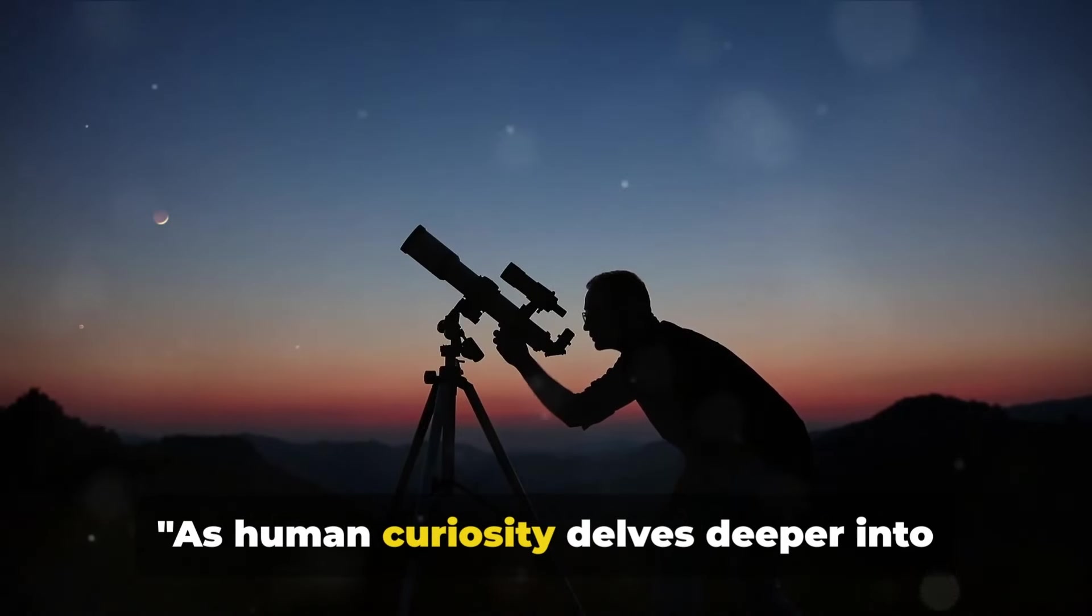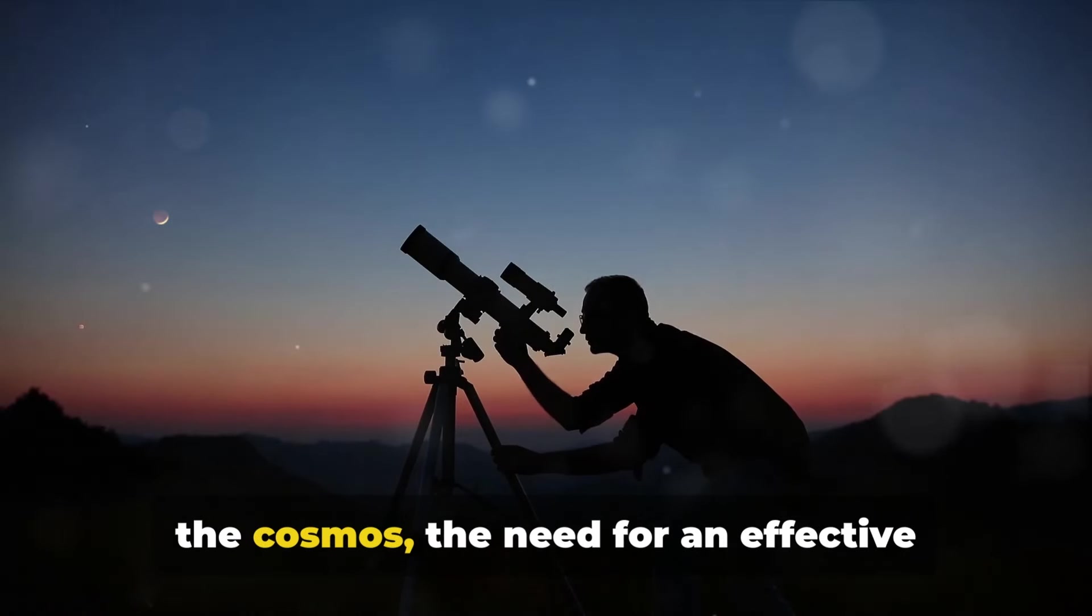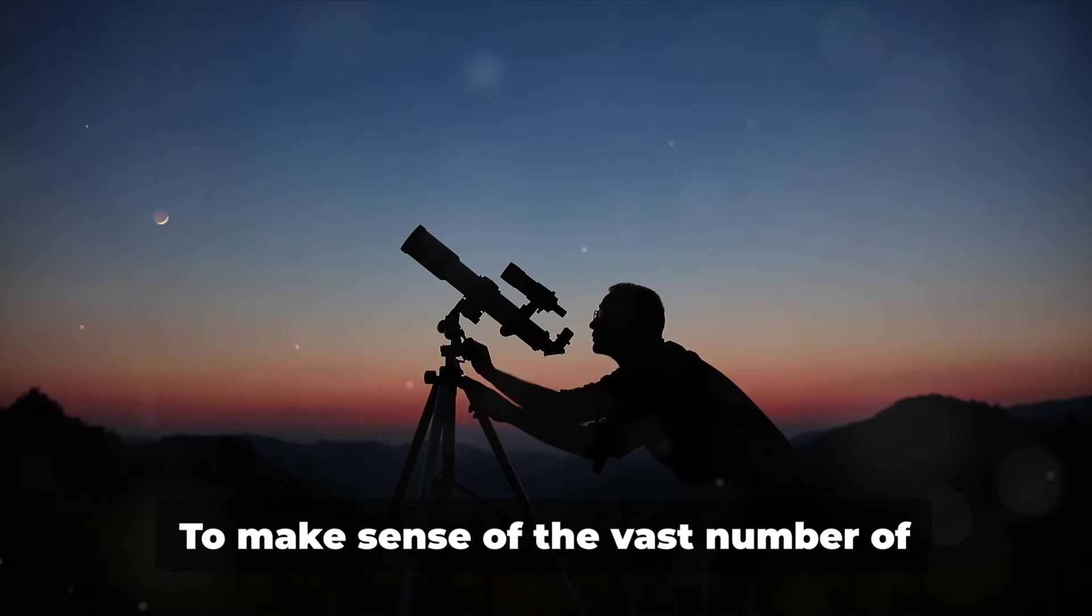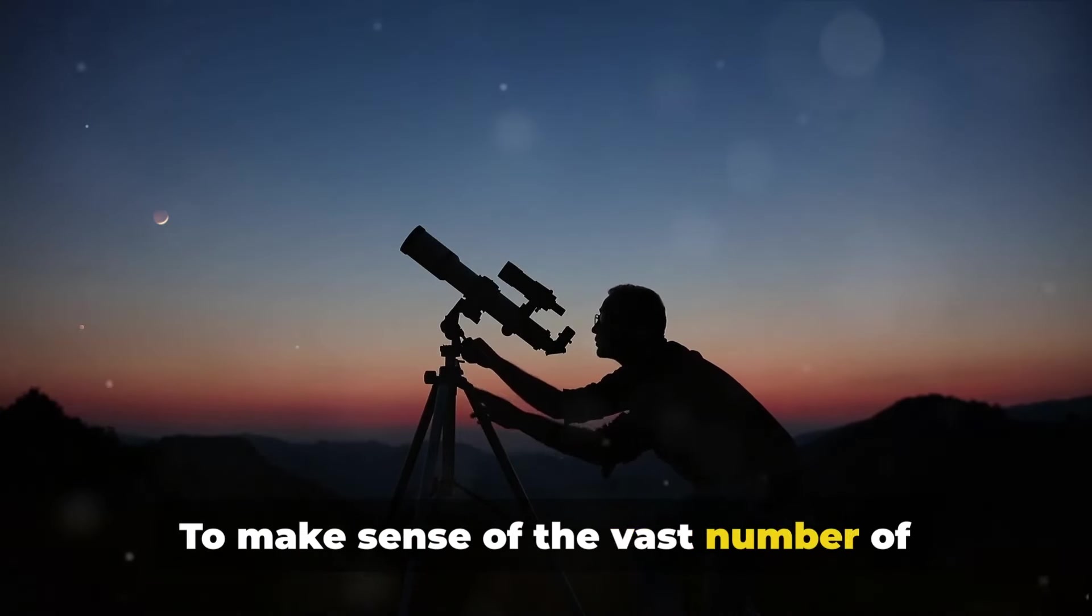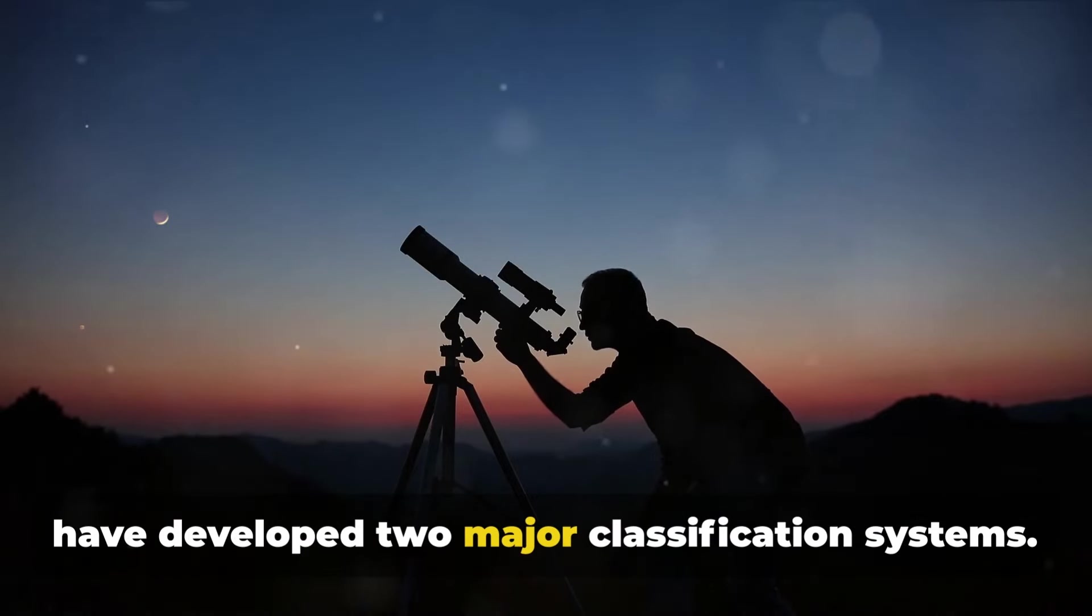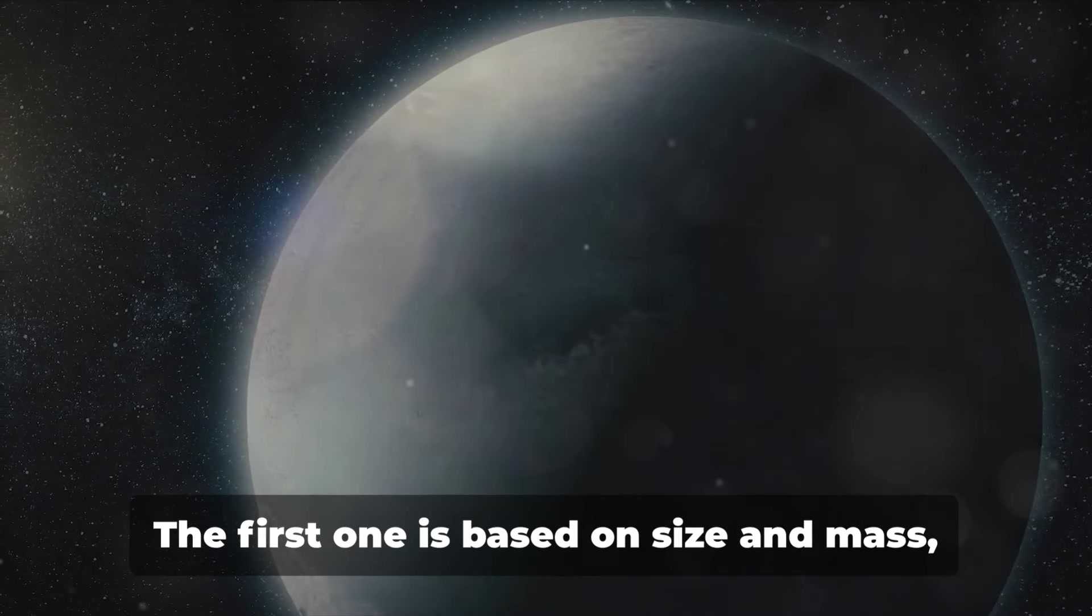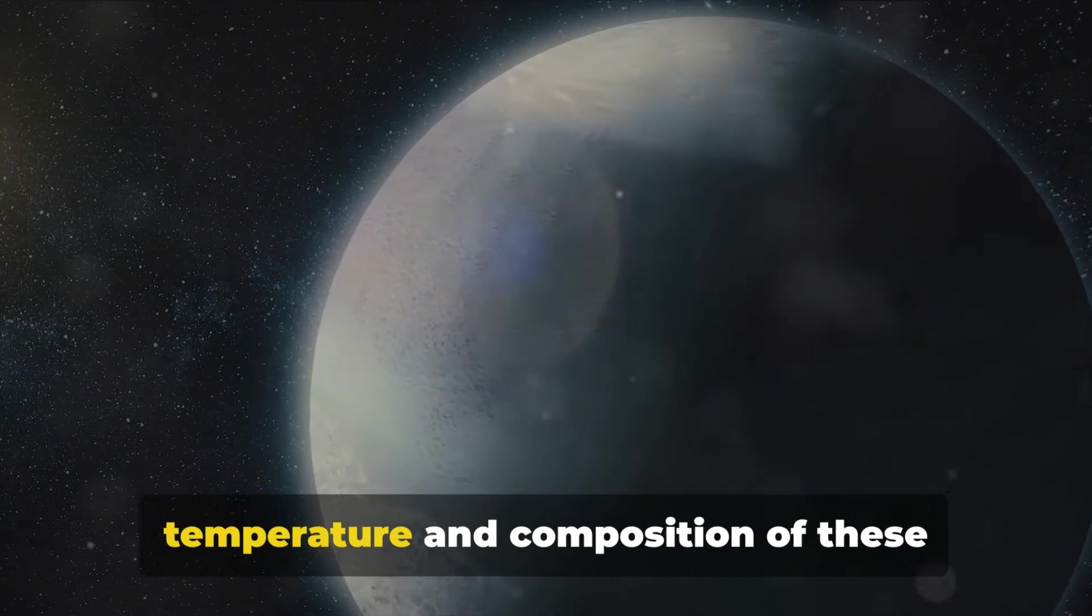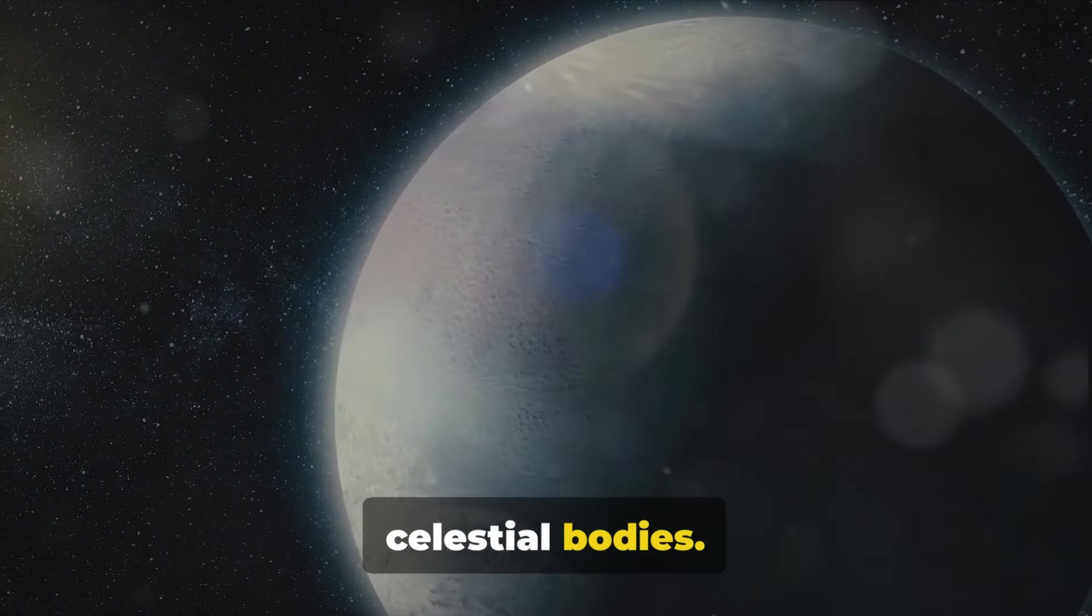As human curiosity delves deeper into the cosmos, the need for an effective exoplanet classification system becomes evident. To make sense of the vast number of exoplanets discovered so far, astronomers have developed two major classification systems. The first one is based on size and mass, while the second one looks at the temperature and composition of these celestial bodies.